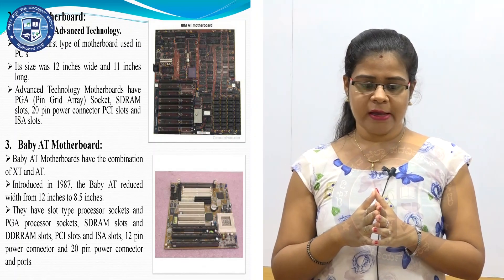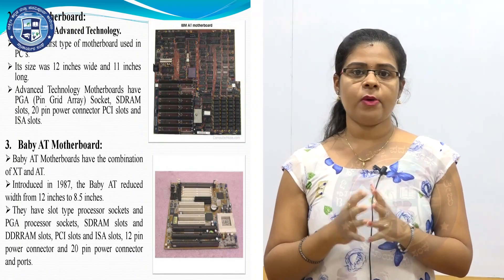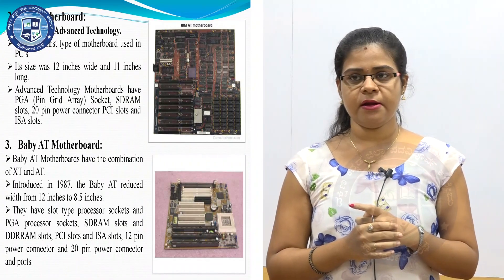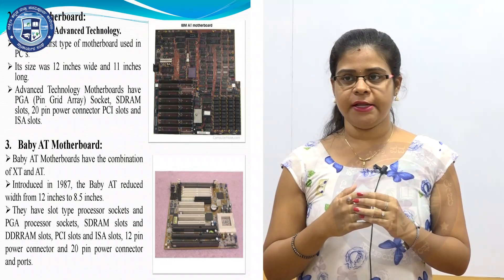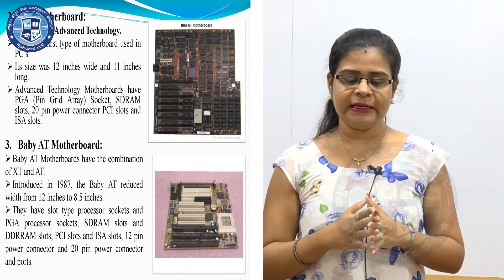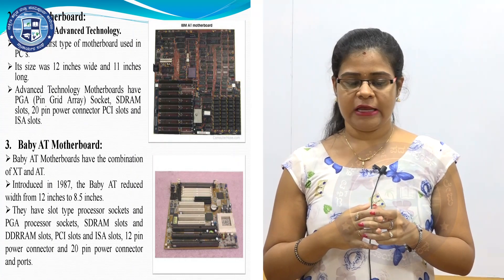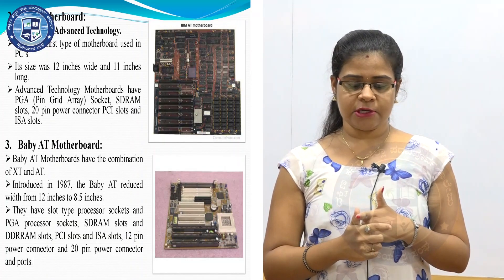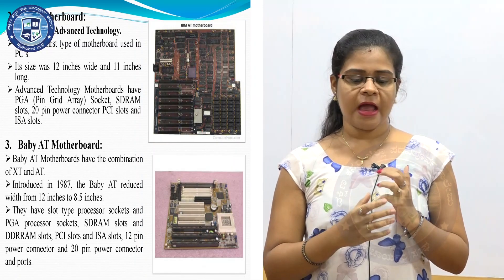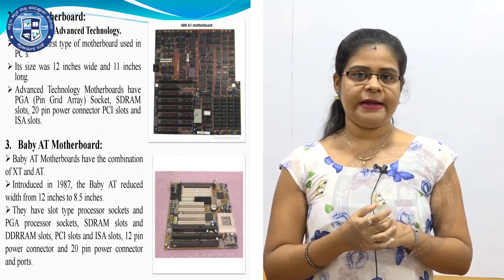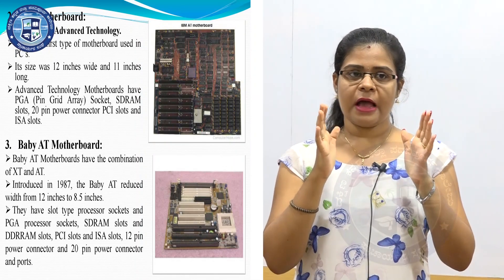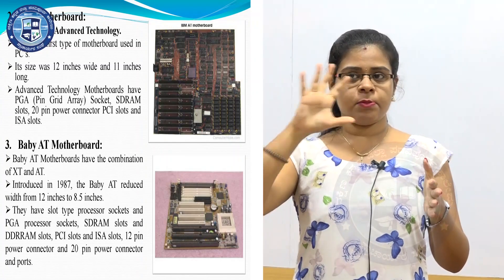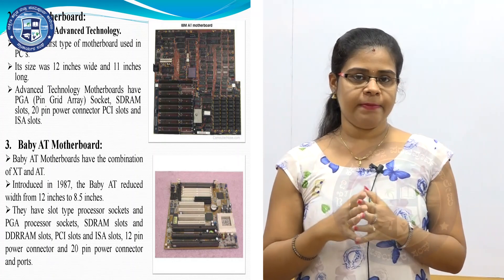The AT motherboard is 12 inches long and 11 inches wide. It has PGA socket, SD RAM slots, 20-pin power connector, PCI slots, and ISA slot. The baby AT motherboard was introduced in 1987 and its size is 8.5 inches. It is a combination of AT and XT motherboard, and has PGA processor sockets, SD RAM slots, DDR RAM slots, PCI slots, ISA slot, 12-pin and 20-pin power connectors.